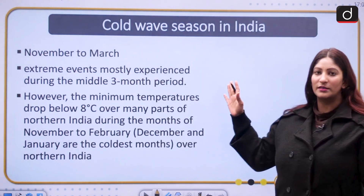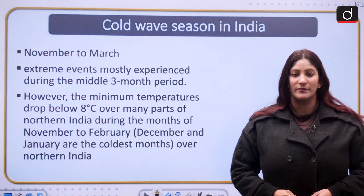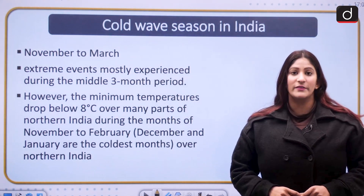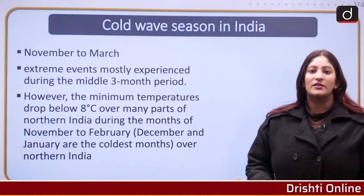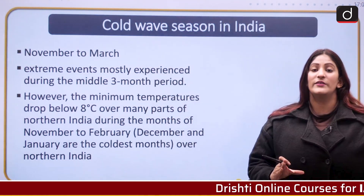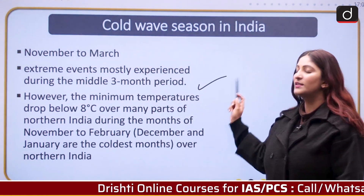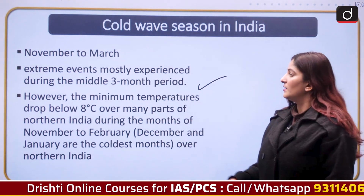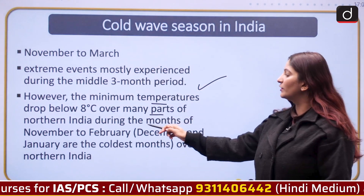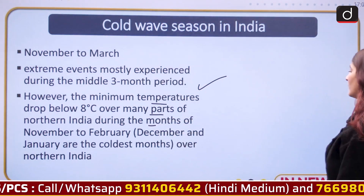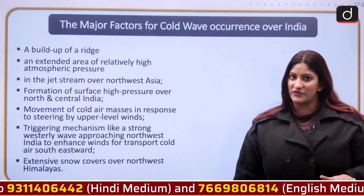From the perspective of your examination, it will also be asked to analyze the trend of the cold wave. Generally in India, the cold wave is registered between November to March. The three middle months — December, January, and February — register the most extreme cold wave temperatures. The minimum temperature drops below 8 degrees Celsius over many parts of northern India during November to February.